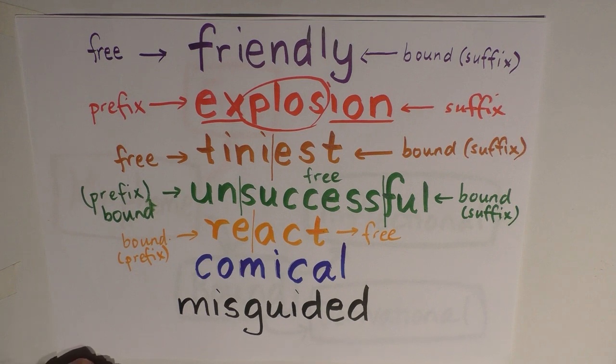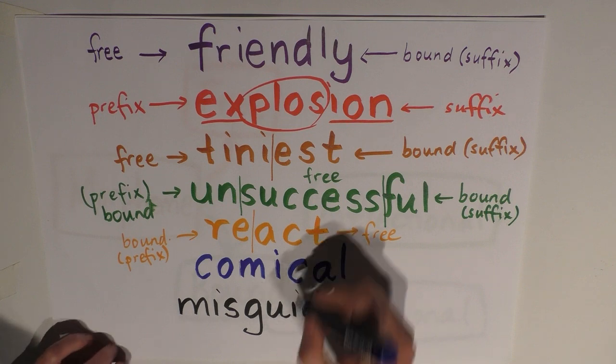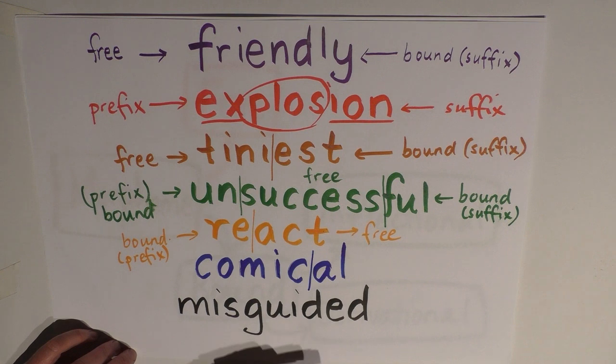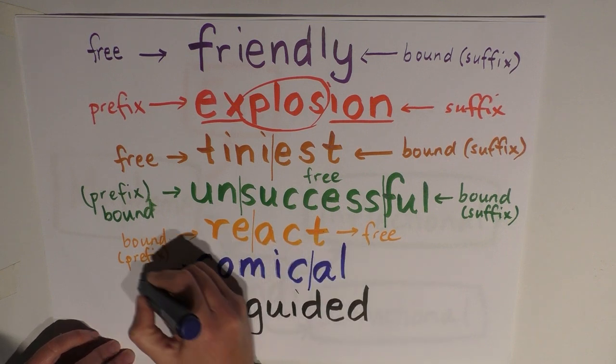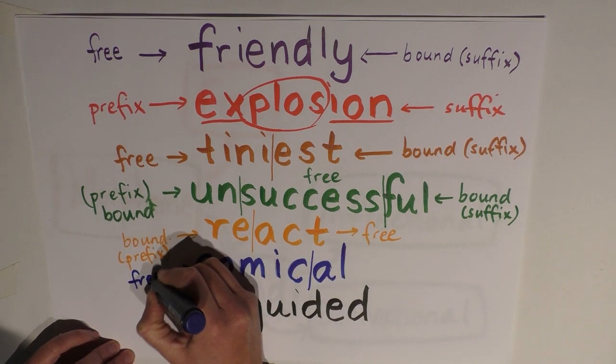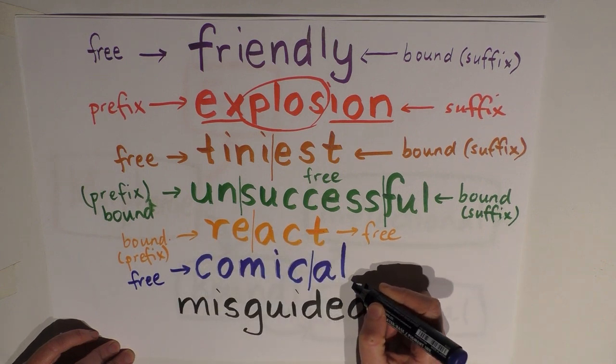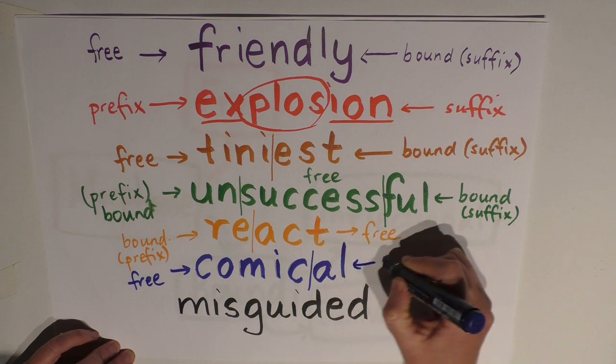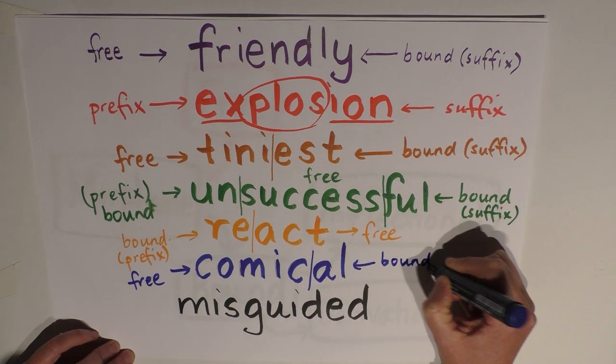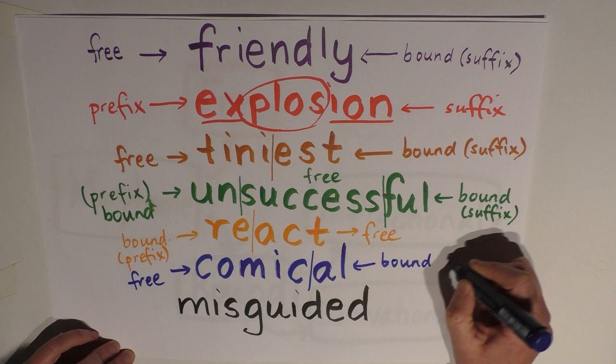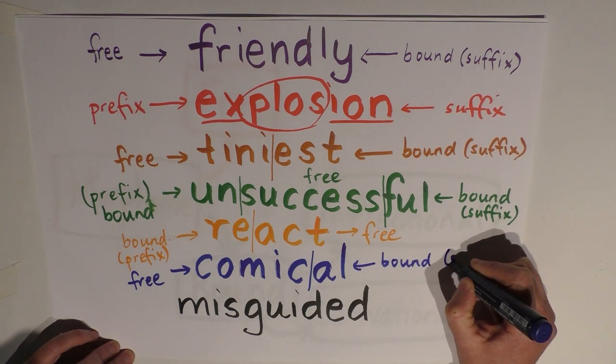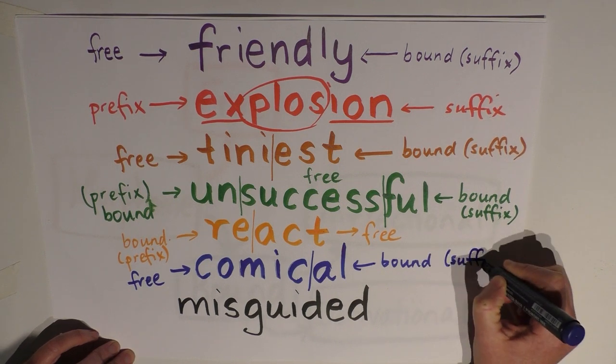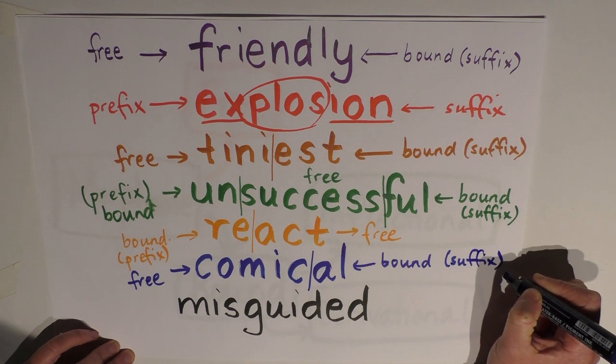We've got 'comical.' Comical is once again clearly defined into two morphemes. We have 'comic' on one side, which of course is a noun, and that's the free morpheme. And then we have 'al' on the end, which is a suffix, a bound morpheme, which is a suffix. And it's playing the role to change 'comic' into an adjective: 'comical.'